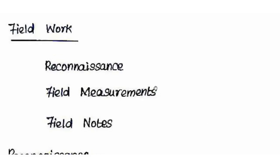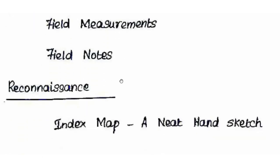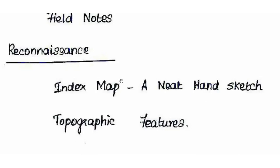In field work, we first survey one area. We inspect the area initially — a preliminary inspection. We inspect the topographical features such as buildings, roads, electric lines, etc. Then we prepare a rough sketch — that is the first reconnaissance step.